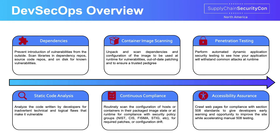Once you've pulled in those dependencies, you have your own code — the code you've written to comprise your application. How do we make sure that code doesn't have known vulnerabilities? Tools for that would be static code analysis: SonarCube, Fortify. These tools look for things like hard-coded password variables, or more sophisticated issues like memory vulnerabilities if you're writing code in C, for example.